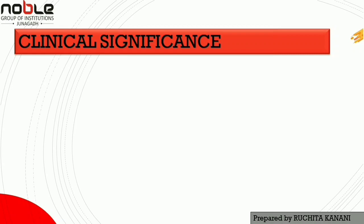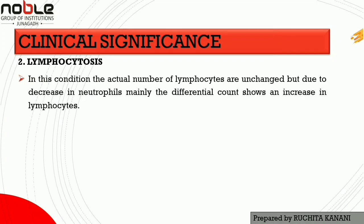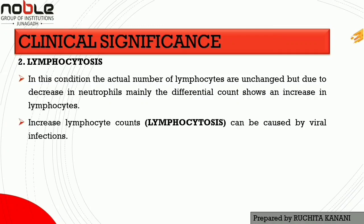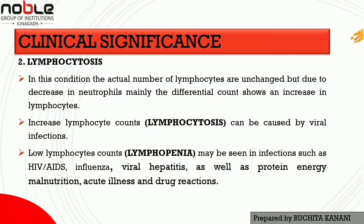The second clinical significance is lymphocytosis. In this condition, the actual number of lymphocytes may be unchanged, but due to a decrease in neutrophils the differential count shows an increase in lymphocytes. Increased lymphocyte count, known as lymphocytosis, can be caused by viral infections. Decreased lymphocyte count, known as lymphopenia, may be seen in HIV/AIDS, influenza, viral hepatitis, protein-energy malnutrition, acute illness, and drug reactions.